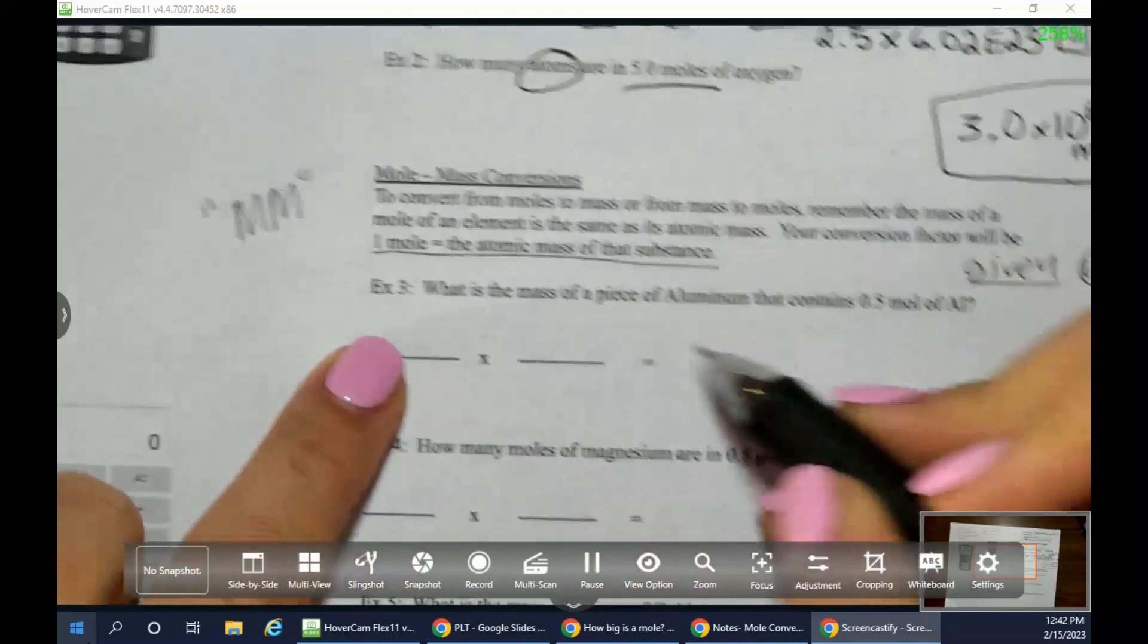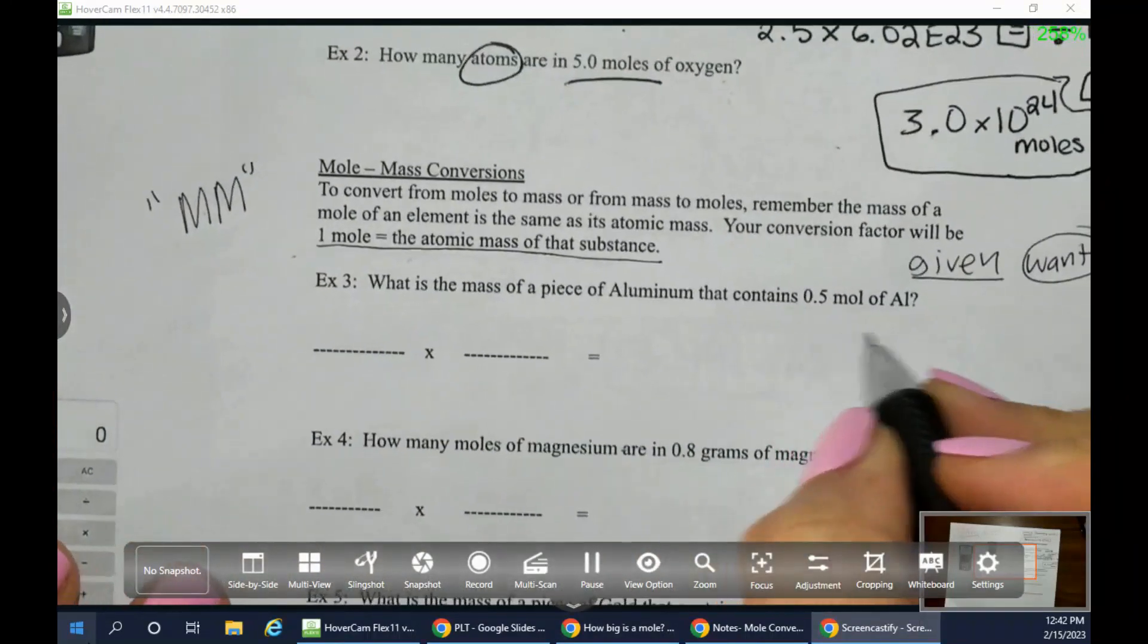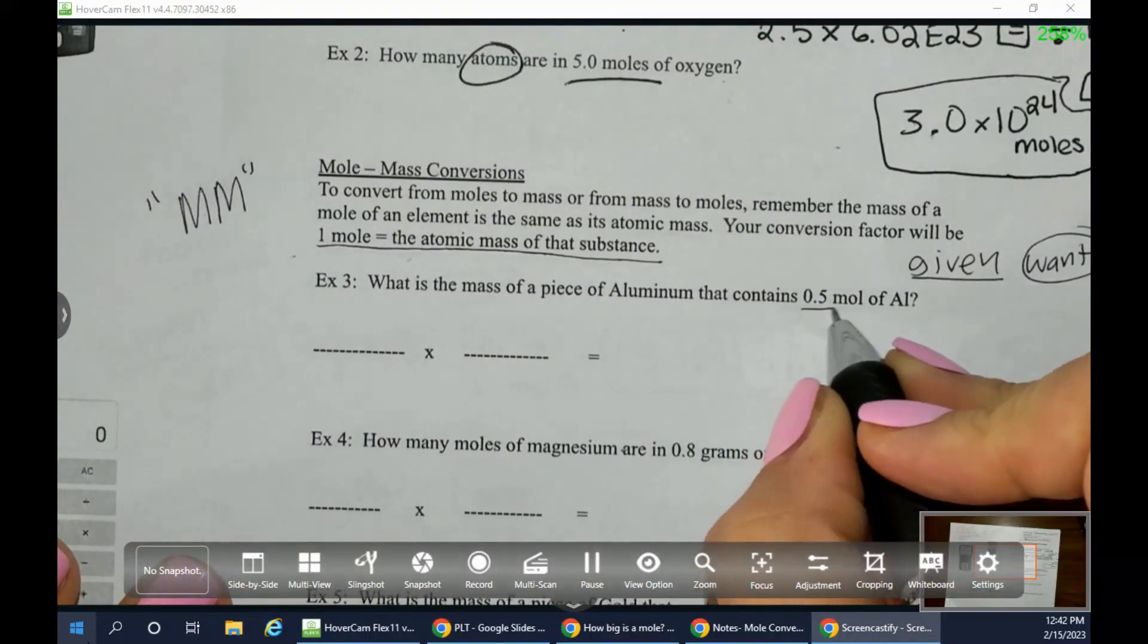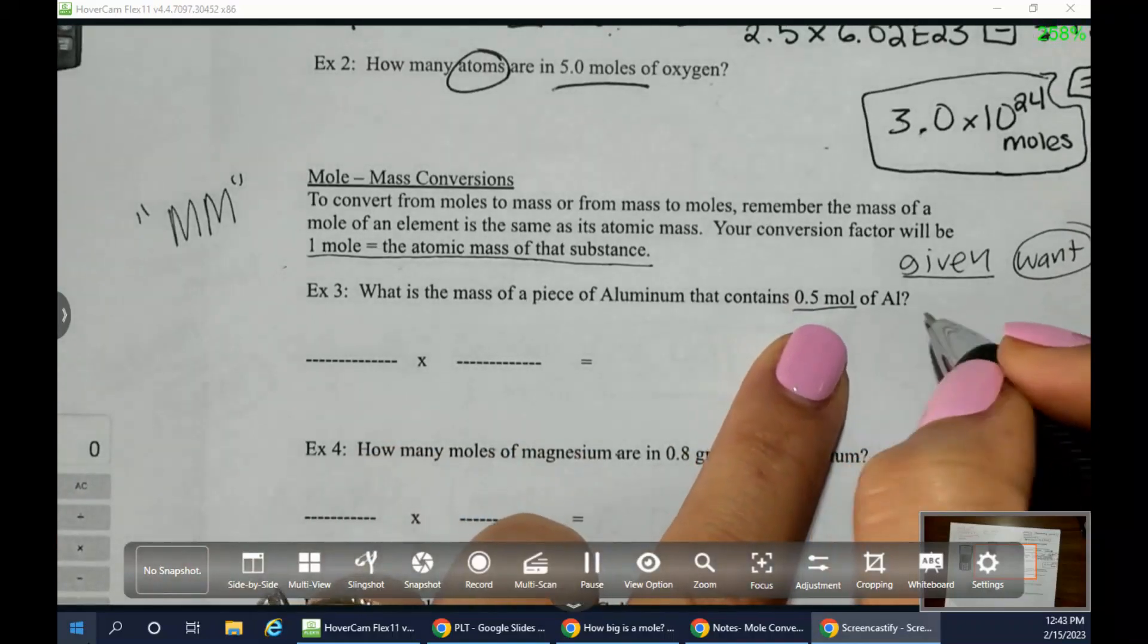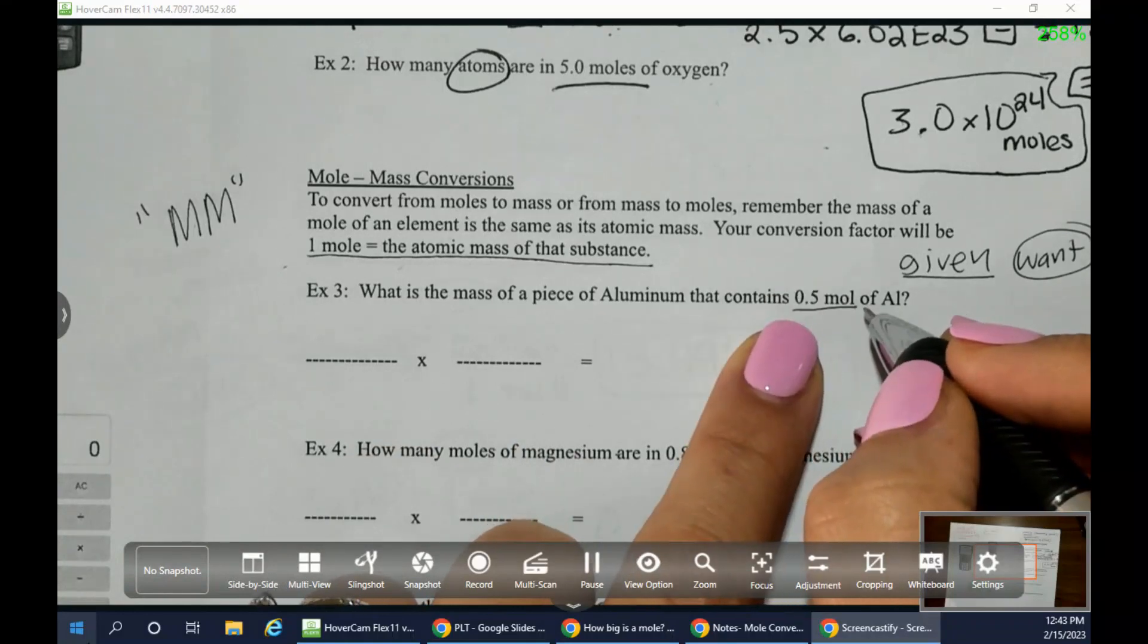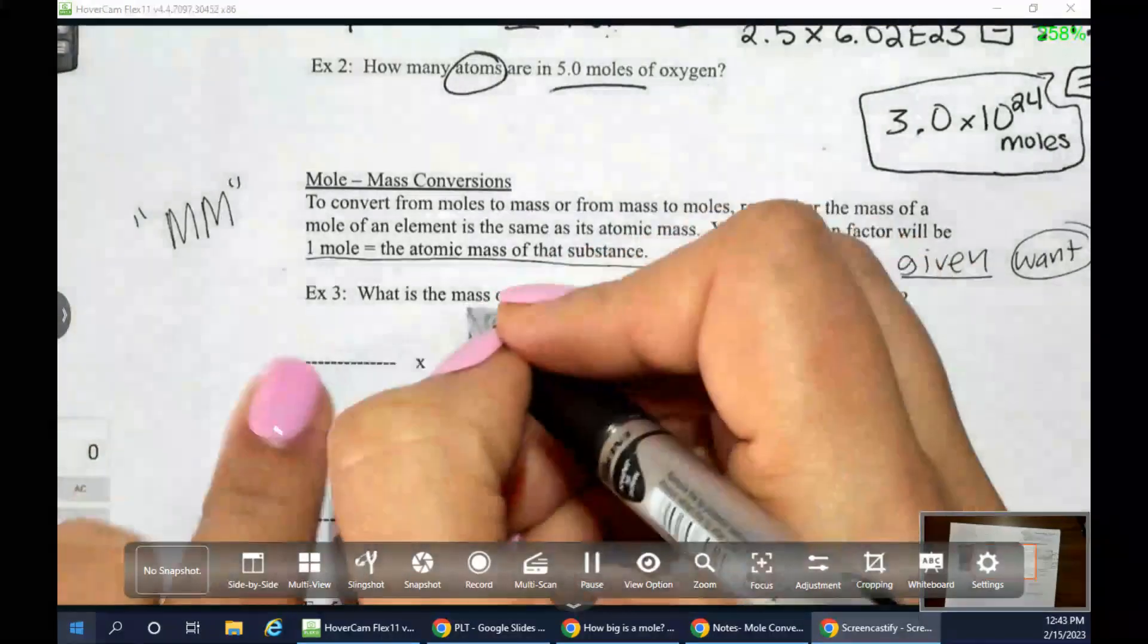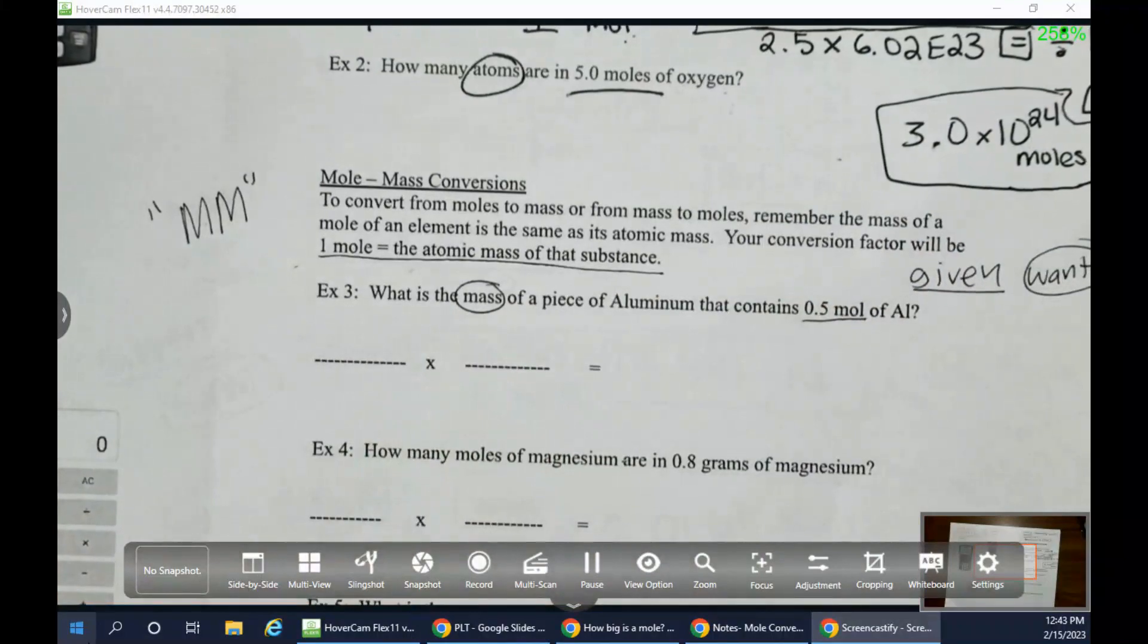So looking at example three, we have what is the mass of a piece of aluminum that contains 0.5 moles of aluminum. So I'm going to go ahead and underline what's given to me, which tends to be the number. So I'm going to go ahead and underline that word, and then remember, start to get in the habit of also adding in the label, but we'll settle for this for now. So 0.5 moles is what we're given. What are we asked for? What is the mass? I'm going to circle the word mass. What is the unit of mass that we've gotten to see? What is the unit for mass? Grams. Thank you.